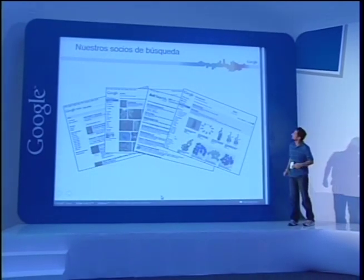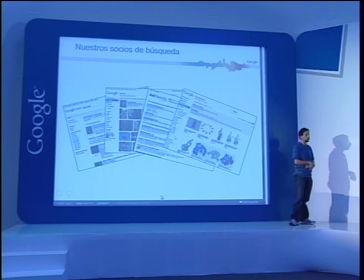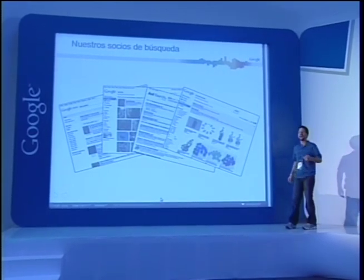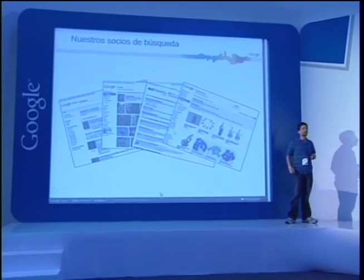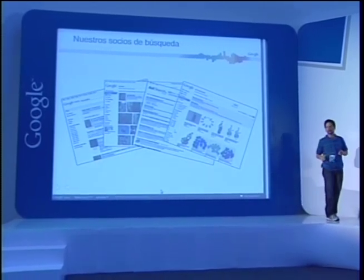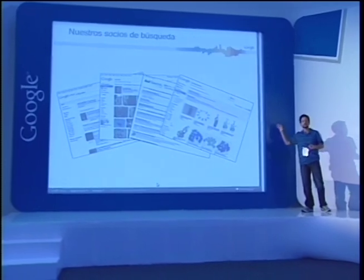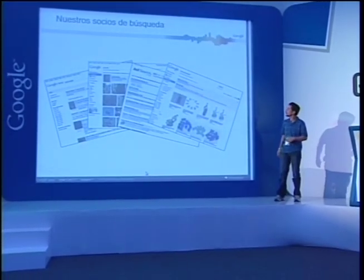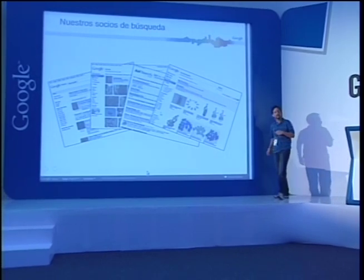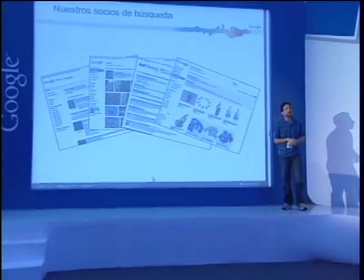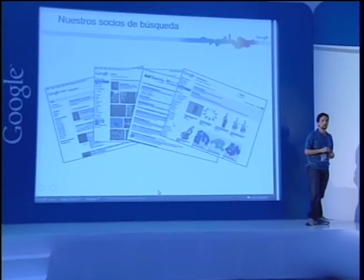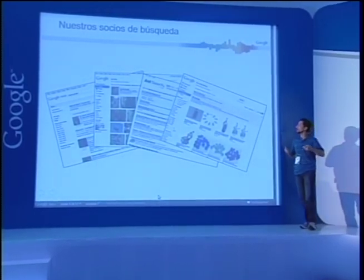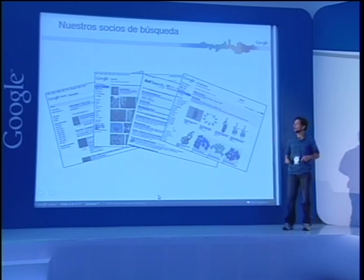Por otro lado, tenemos varios socios de búsqueda. Si ustedes van al buscador de AOL o de Ask, varios buscadores también presentan nuestros anuncios. Ustedes ponen sus anuncios en AdWords y automáticamente van a aparecer en esos sitios. Adicionalmente, en varias propiedades de Google, podrían aparecer anuncios en Google Images, Google Videos, o en diferentes propiedades de Google.